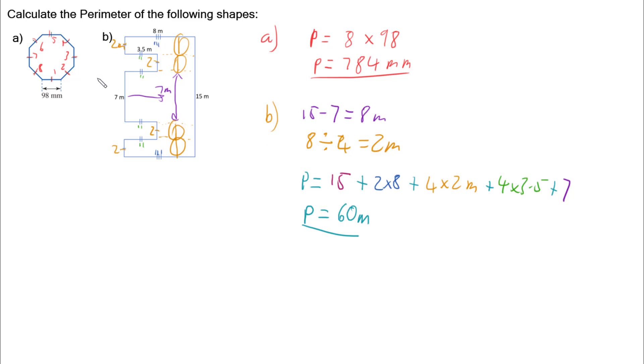So depending on what shape you have and what information you're given, you're going to need to do a combination of multiplying because you might have duplicate sides, or you might need to do a little bit of working out to work out what the unknown sides are.